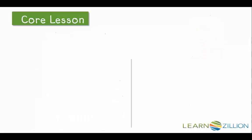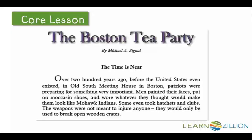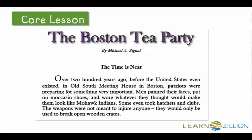Right here, I'm going to take a look at the first paragraph. We already talked about the title and subtitle, so now we're going to read the first paragraph. Over 200 years ago, before the United States even existed, in Old South Meeting House in Boston, patriots were preparing for something very important. Men painted their faces, put on moccasin shoes, and wore whatever they thought would make them look like Mohawk Indians. Some even took hatchets and clubs. The weapons were not meant to injure anyone. They would only be used to break open wooden crates.